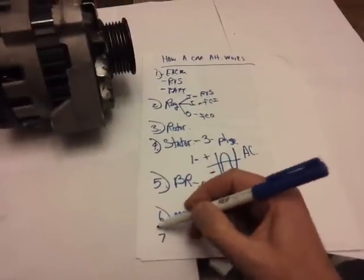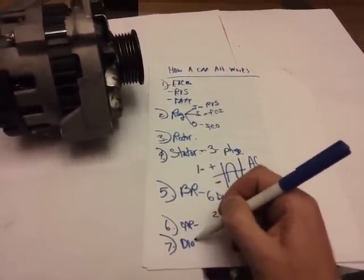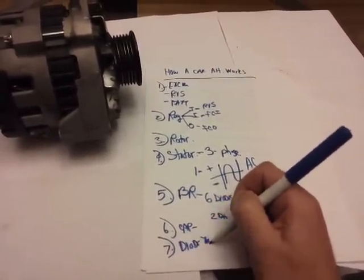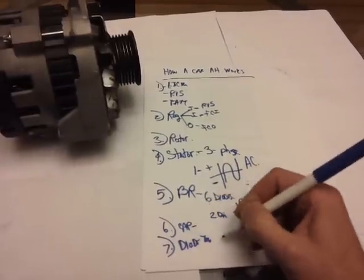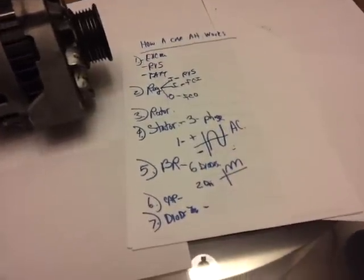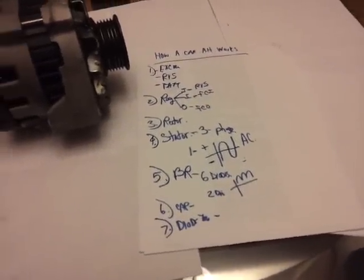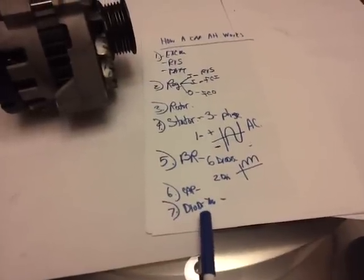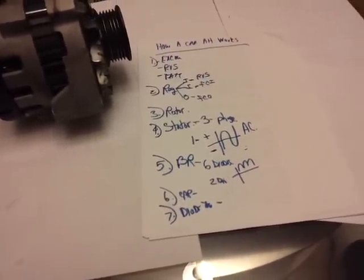Now number seven is a diode trio. There's three diodes here, three check valves, one for each phase.